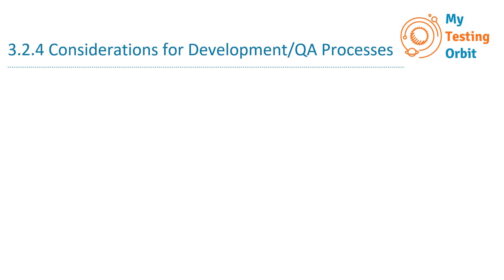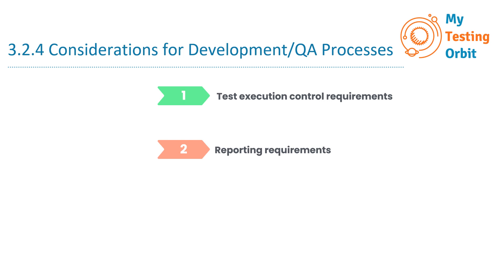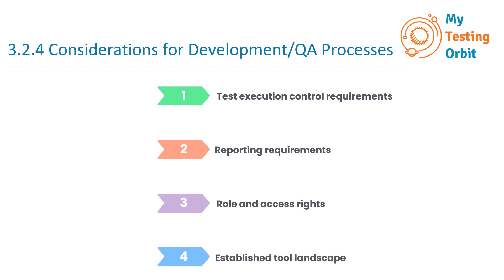The aspects of the development and quality assurance processes are vital components to consider whenever we are designing our test automation architecture. The ones we will go through today are test execution control requirements, reporting requirements, role and access rights, and established tool landscape. While this list is not exhaustive, it serves as a sample of the important aspects.